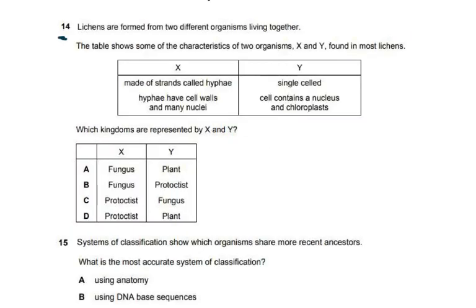Question fourteen: lichens are formed from two different organisms. Organism X is made of strands called hyphae with cell walls and many nuclei — so it must be a fungus. Organism Y is a single cell with a nucleus and chloroplast — that makes it a eukaryote but single-celled, so it is a protoctist. The answer is B.